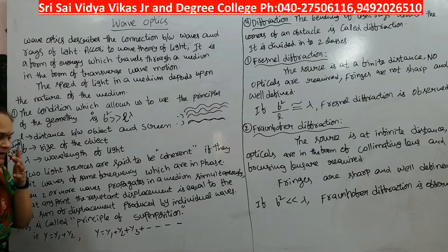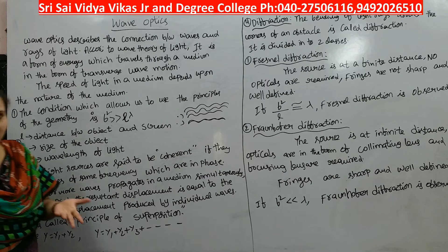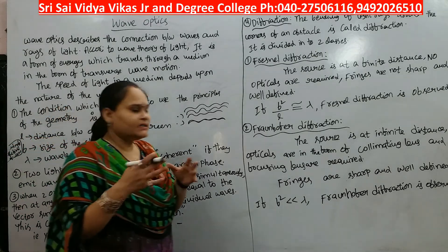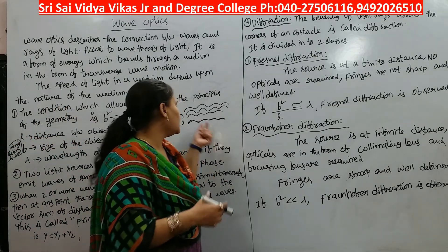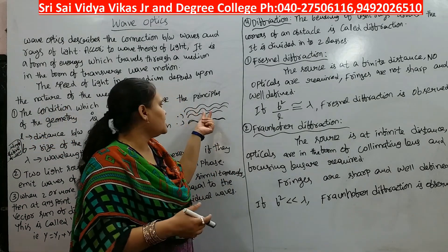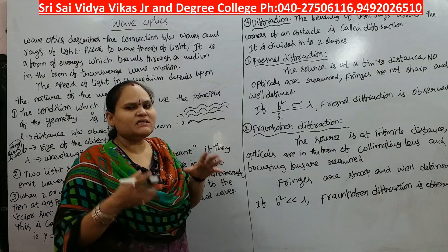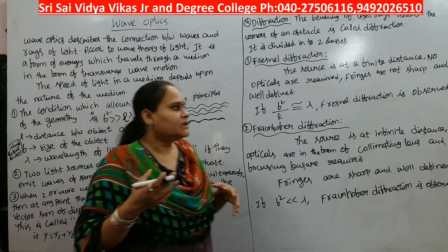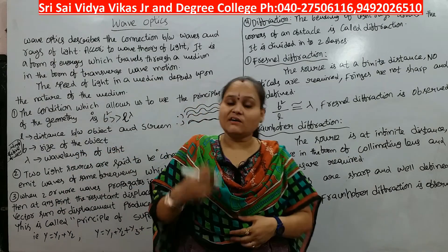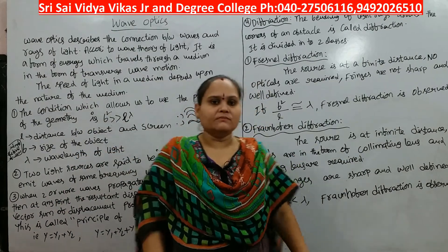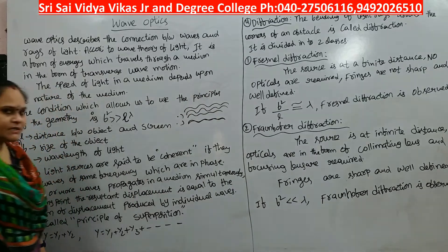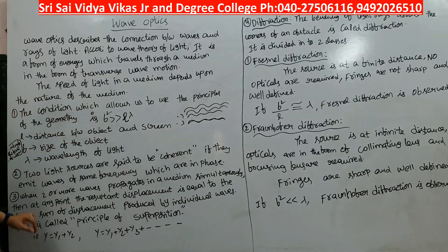Coherent sources emit light waves having equal phase — that means two waves are of the same frequency, or having a certain constant phase difference. Phase means it is the state of the system.